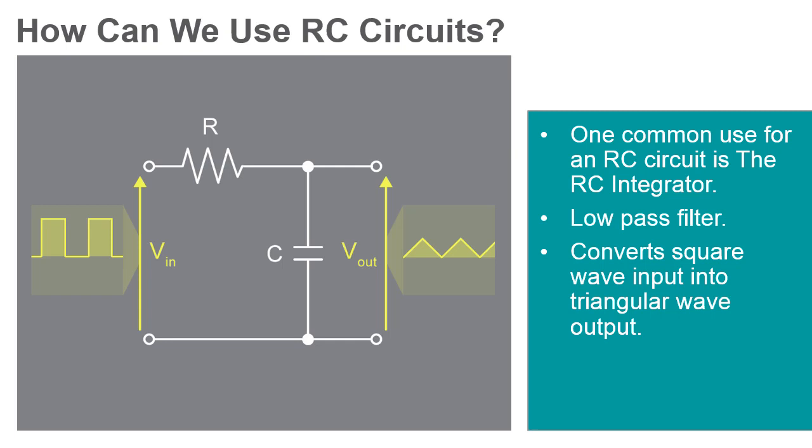When the square wave goes negative, the capacitor starts to discharge, and the triangle wave starts decreasing.